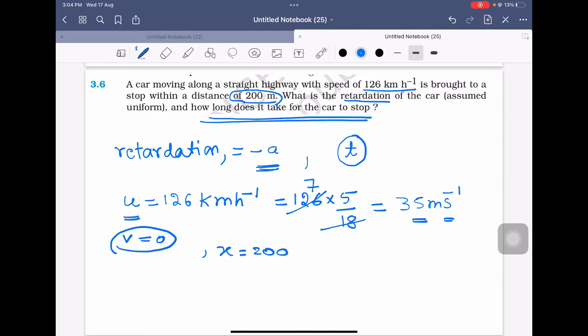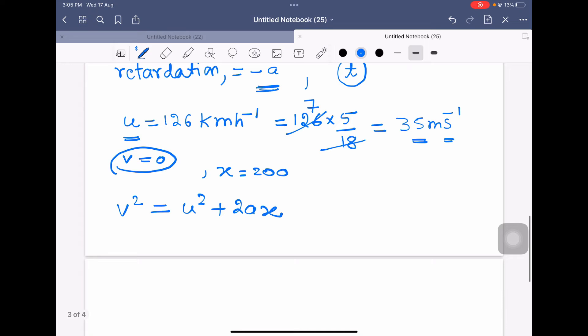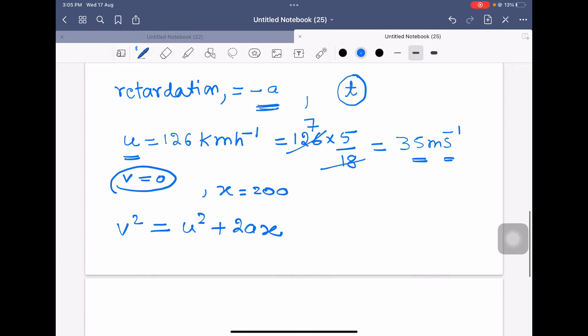So we can calculate acceleration using the equation v squared equals u squared plus 2ax. V squared, final velocity squared equals 0. U squared, U is 35. 35 squared plus 2ax, 2a into 200.